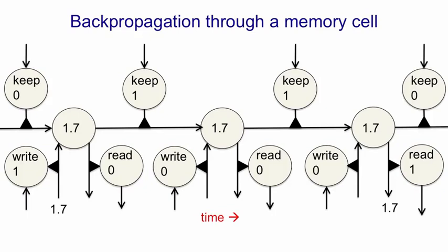Now, if you look at the 1.7 that comes out when we do the retrieve, and you look at the path back to the 1.7 that came in, along that path there are these little triangular symbols, and next to each triangular symbol there's a 1. That means the effective weight on that connection is 1. So as we go back along that path, whatever error derivative we have for the 1.7 when it's retrieved gets backpropagated to the 1.7 when it's stored. So if you'd rather have retrieved a bigger value, you can send the information back and tell it it should have stored a bigger value. Notice that as long as the relevant gates have values of 1, there's no attenuation in the backpropagated signal. If they're logistic gates there will be some slight attenuation, but it can be very small, and so information can travel back through hundreds of time steps.